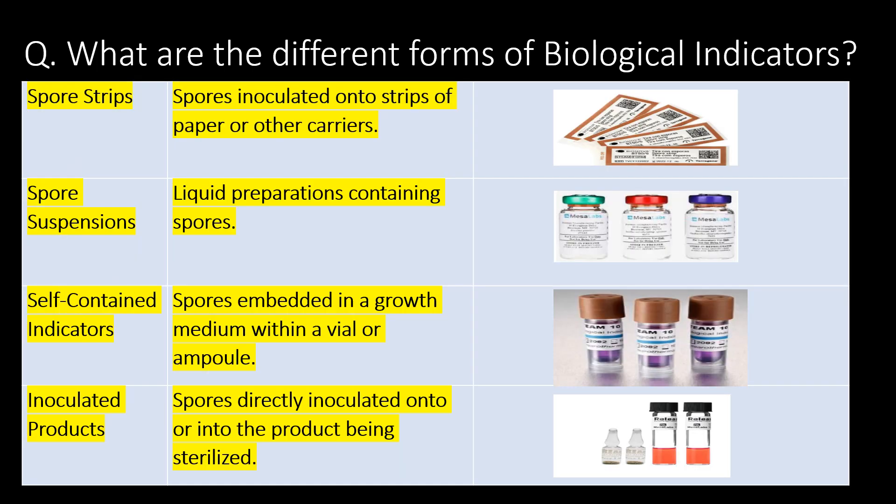What are the different forms of biological indicators? First, spore strips — spores inoculated onto strips of paper or other carrier. Second, spore suspensions — liquid preparations containing spores. Third, self-contained indicators — spores embedded in a growth medium within a vial or ampoule. Fourth, and very importantly, inoculated products — spores directly inoculated onto or into the product being sterilized.